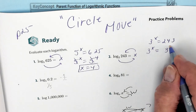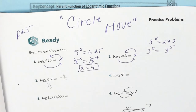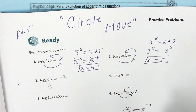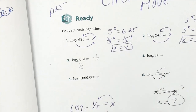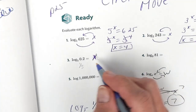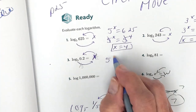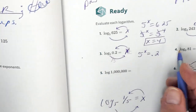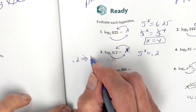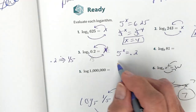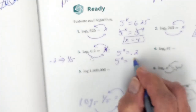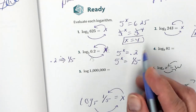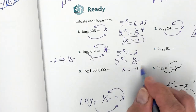243 is 3 to the fifth power — let me double check — yes, so x equals 5. On this one, I have 5 to the x equals 0.2. If you use your fraction-to-decimal key on your calculator, it will tell you that 0.2 is one-fifth. Since we have a fractional answer, our exponent has to be negative.